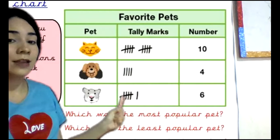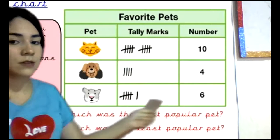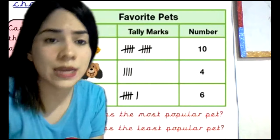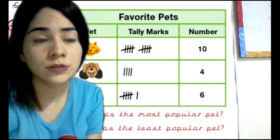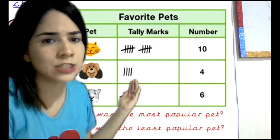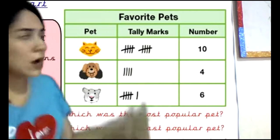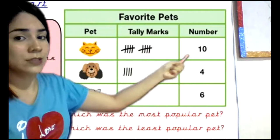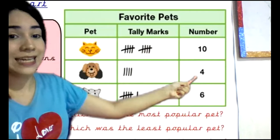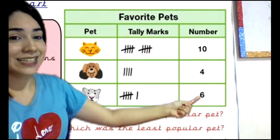Remember that the diagonal tally means five. So five and one equals six. How many people did this person ask in total? You have to count: ten plus four equals fourteen, and fourteen plus six equals twenty. Twenty people participated.